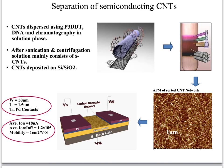To address the first challenge of separating semiconducting tubes from metallic tubes: CVD methods to achieve single-chirality growth have not been successful so far. In solution-phase methods, nanotubes are dispersed in a solvent with chemicals such as P3DDT or DNA. We sonicate the mixture, and these large molecules interact with and wrap around the nanotubes. Then we centrifuge the mixture, and depending on this interaction we get a density gradient in solution phase where we can separate nanotubes based on their chirality.